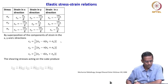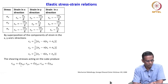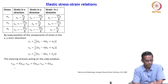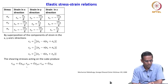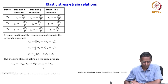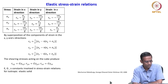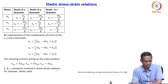The shearing stresses acting on the cube produce: tau xy equals G times gamma xy, where G is the shear modulus. Similarly for the yz and xz directions. So we now have three constants: E (Young's modulus), G (shear modulus), and mu (Poisson's ratio). These are the constants involved in the stress-strain relations for isotropic elastic solids.